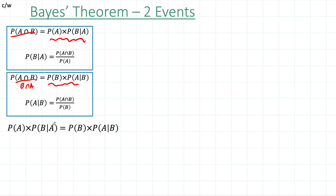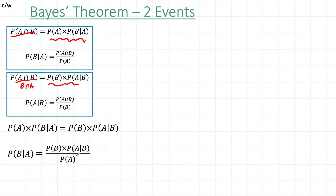We can use the two expressions and equate them because they represent the same thing. So we get that P(A) times P(B|A) is equal to P(B) times P(A|B). If I rearrange it and make P(B|A) the subject, I get the following. So this is kind of the first part of Bayes' theorem. We're still not done, because I can improve it further by looking at P(A).